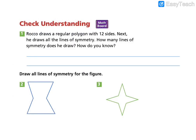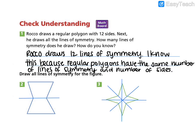All right, so go ahead and complete your check understanding. Press pause and press play to check your work. Let's go ahead and check your work. For number one, we find that Rocco draws 12 lines of symmetry. So your explanation might have looked something like this. I know this because regular polygons have the same numbers of lines of symmetry and number of sides. So the number of lines of symmetry is equal to the number of sides in a regular polygon.